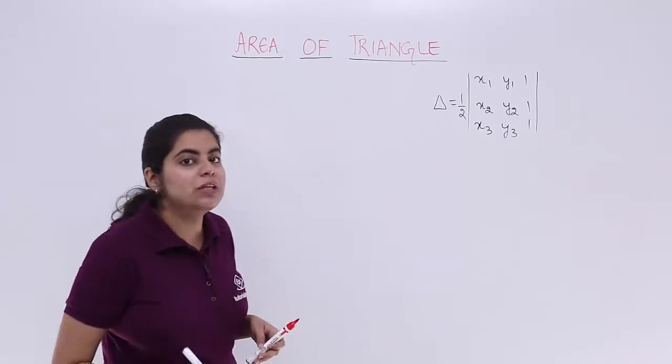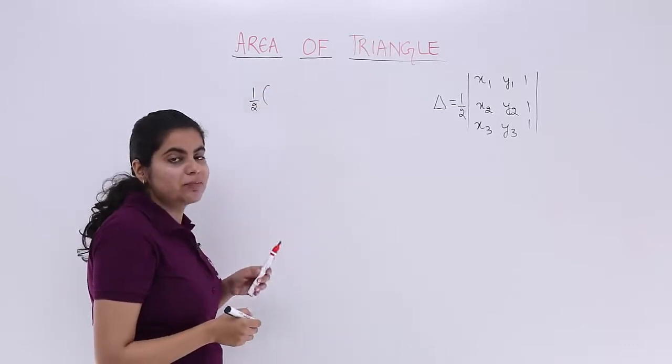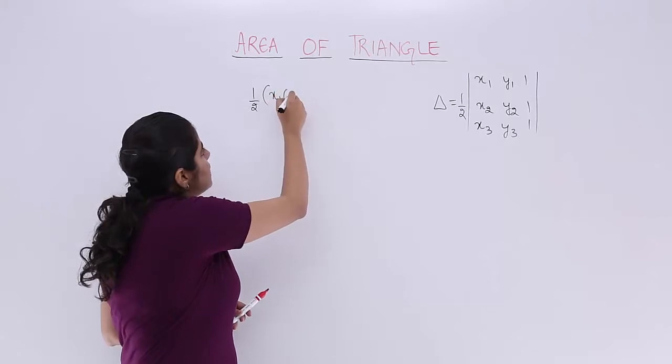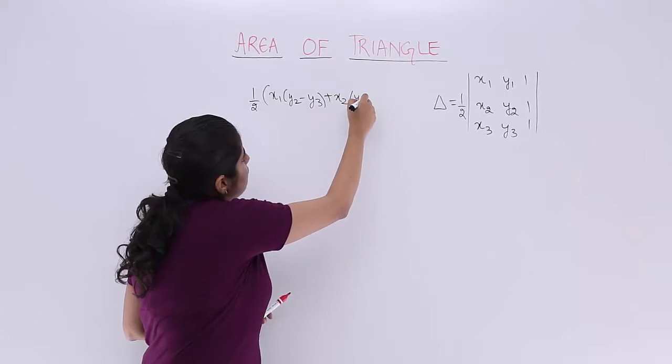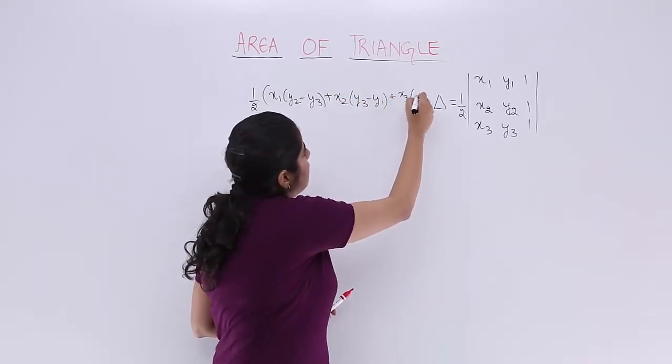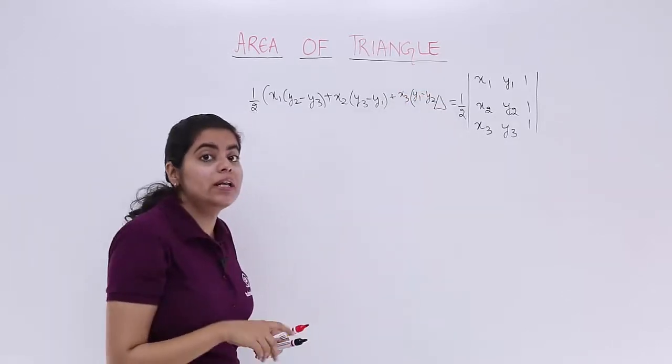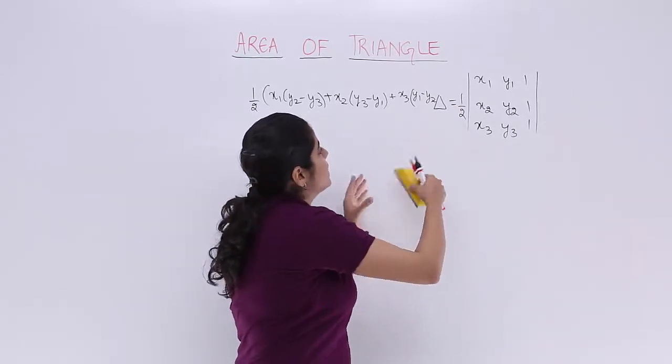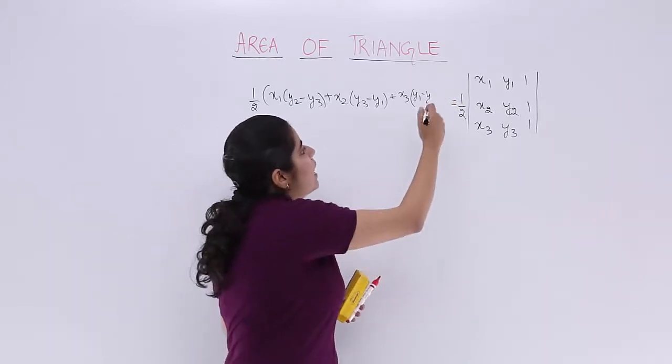The formula which we have been usually studying for area of triangle with vertices x1, y1, x2, y2 and x3, y3 is half into x1(y2-y3) plus x2(y3-y1) plus x3(y1-y2). This is what we have been already studying. Now, we know that if this formula is named as the formula for area of triangle, how has this formula come?